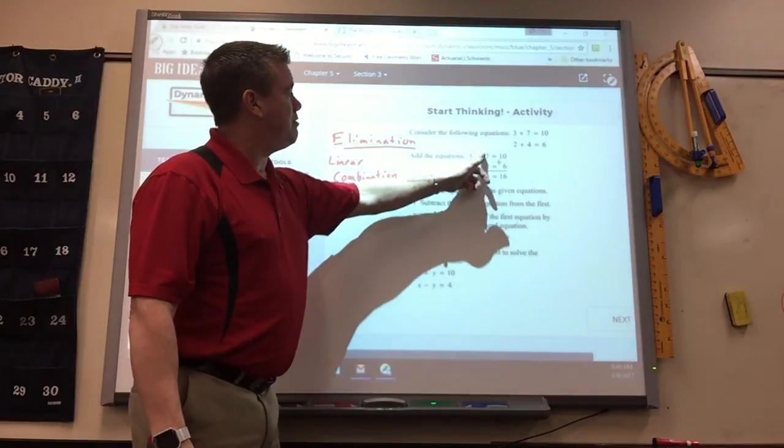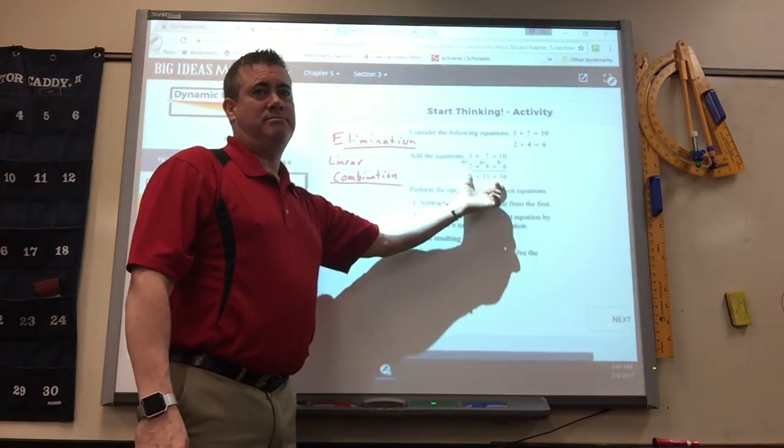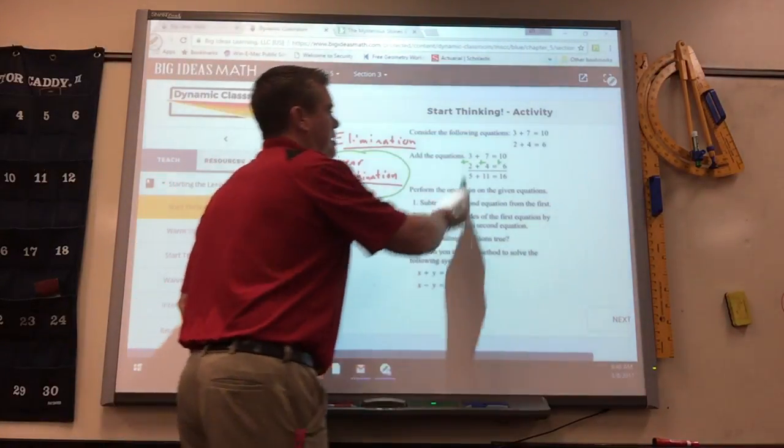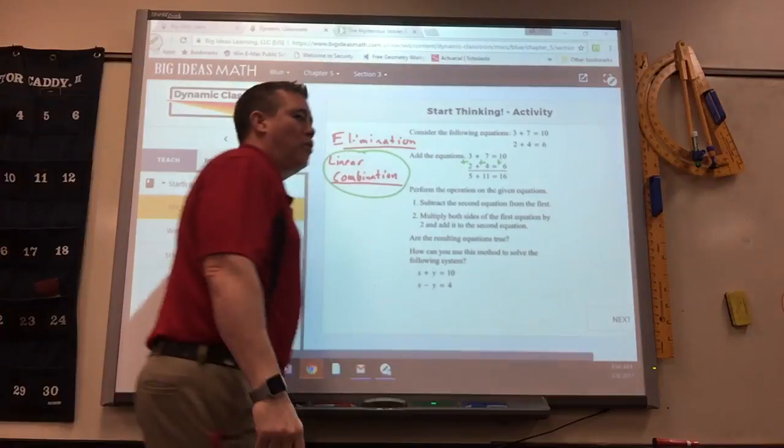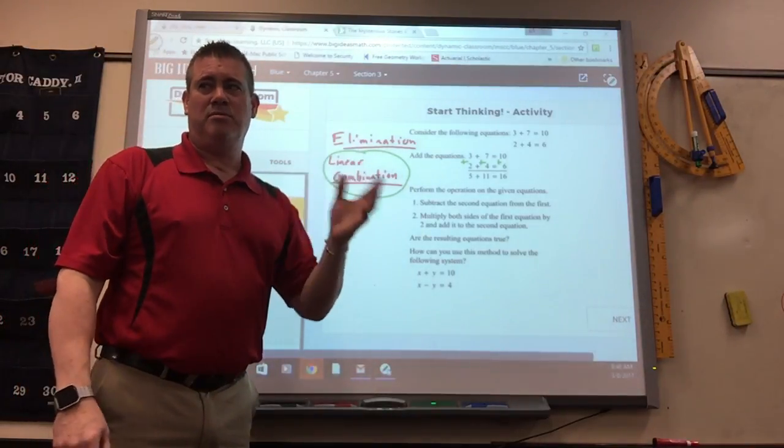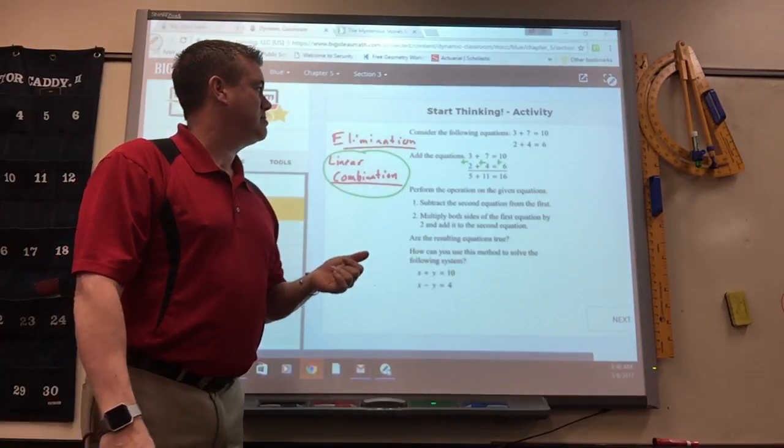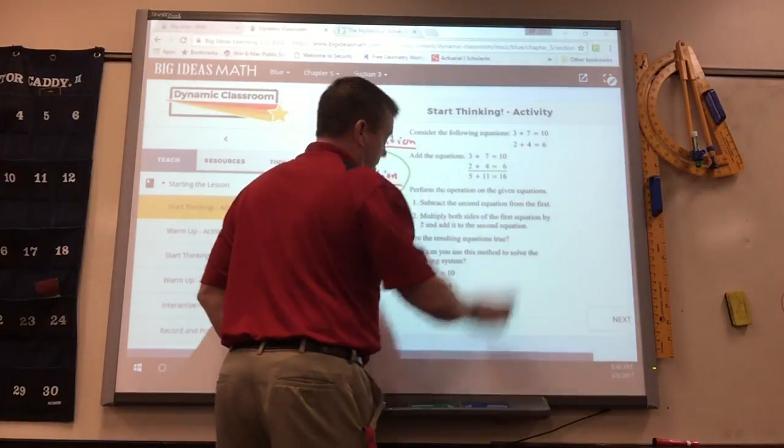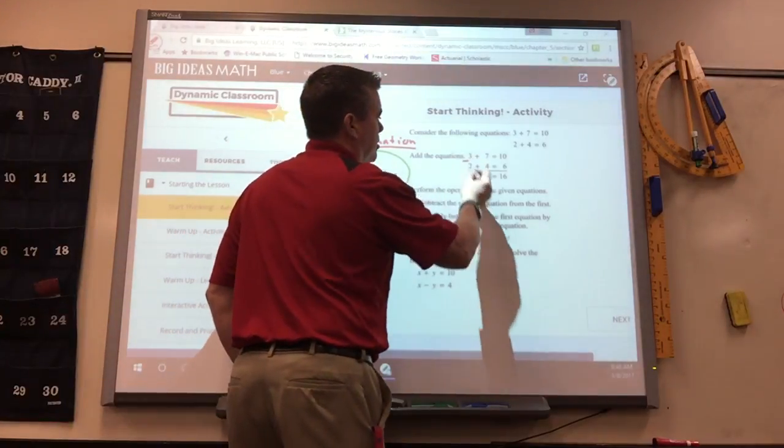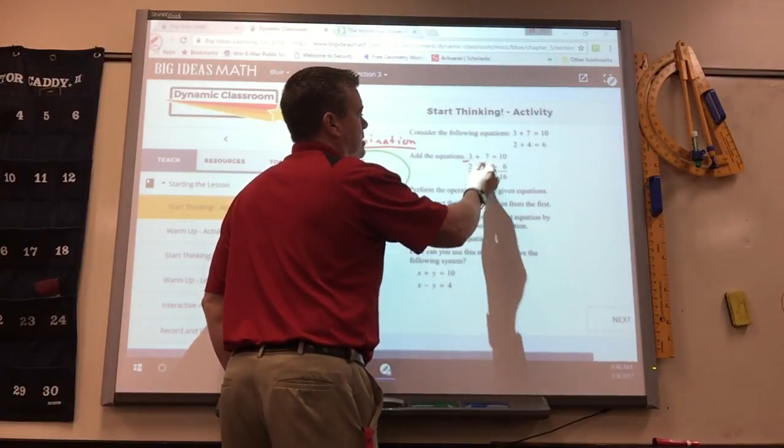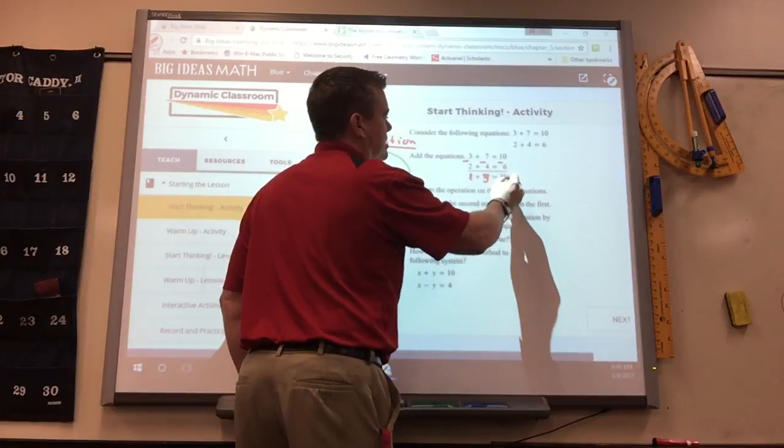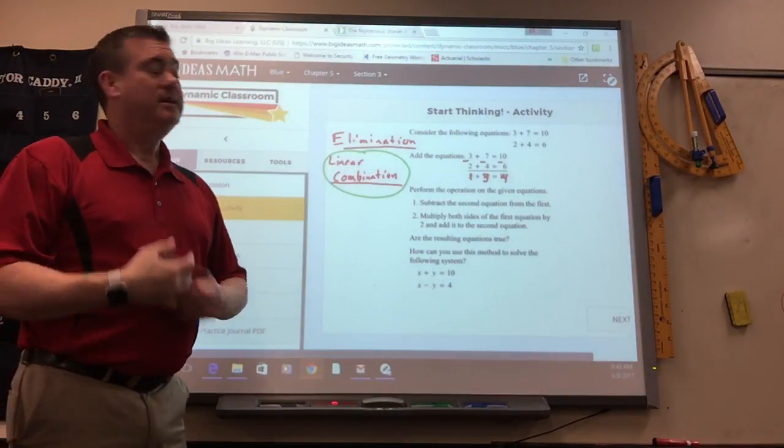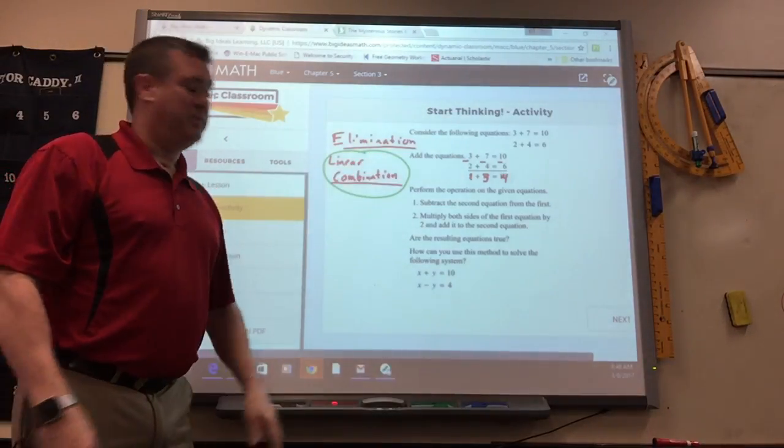So when we add it we get 5, 11, and 16, which is also true. So what they're saying is you can combine these by adding them or subtracting them and it would still stay equal. If I were to subtract these, 3 minus 2 is 1, 7 minus 4 is 3, 10 minus 6 is 4. So it works to add or subtract. So that's the whole idea of doing this elimination.